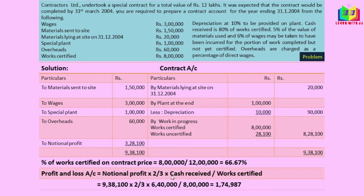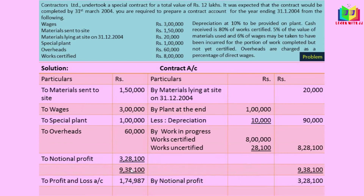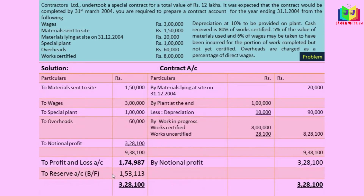Profit and loss = Notional profit × 2/3 × (Cash received ÷ Work certified). Cash received is 80% of work certified, so 80% of 8 lakh = 6,40,000. Therefore: 3,28,100 × 2/3 × (6,40,000 ÷ 8,00,000) = 1,07,487 — this is the profit and loss transfer amount. The difference is 3,28,100 − 1,07,487 = 2,20,613, and this difference is to be transferred to reserve. I hope you all now know how to calculate the value of works uncertified and to transfer the notional profit to profit and loss account and reserve.